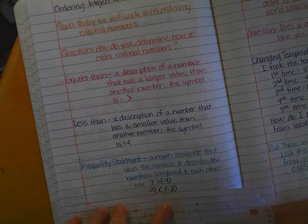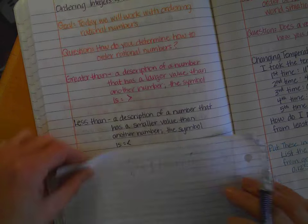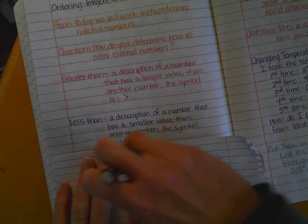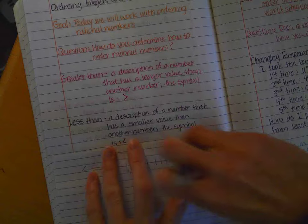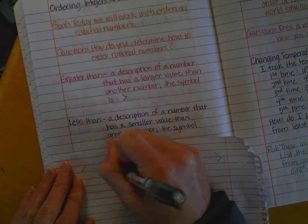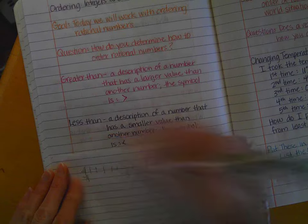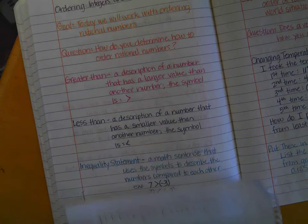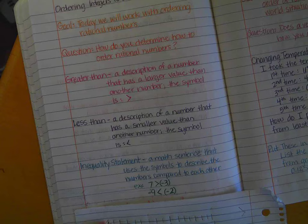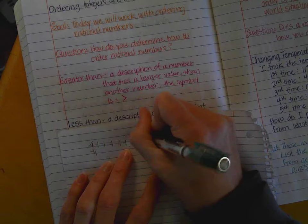Another example of an inequality statement is negative nine is less than negative two. Now some of you are going, oh my gosh, Mrs. Nelson, you're not right. Well, let's check it out. I'm going to erase this so it's not a distractor, and let's build it. So this is negative three, negative four, negative five, negative six, negative seven, negative eight, negative nine. That's right here on our number line. So it said negative nine is less than negative two. Well, negative two sits right here.